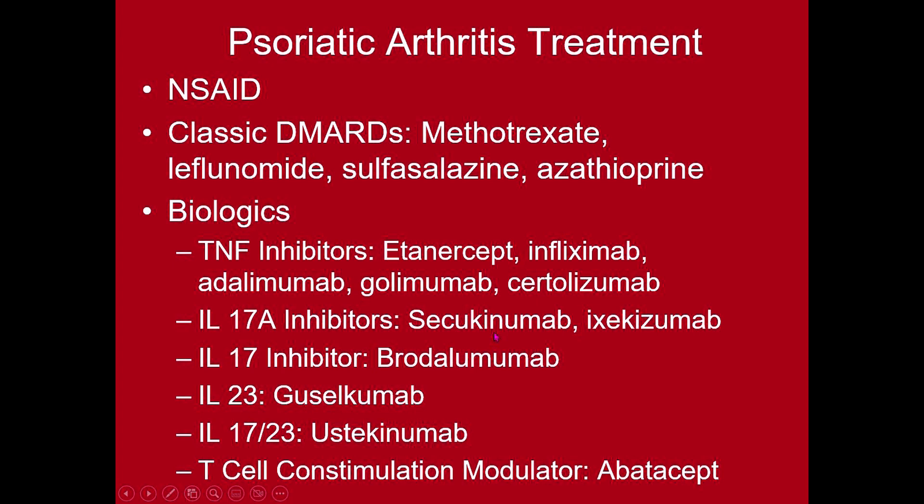There is a more complete discussion of the disease-modifying anti-rheumatic drugs in the talk on treatment of rheumatoid arthritis. With respect to biologic therapies, multiple cytokine blockers have been studied in the treatment of psoriasis and psoriatic arthritis and found to be helpful. As with rheumatoid arthritis, the tumor necrosis factor inhibitors — Etanercept, Infliximab, Adalimumab, Golimumab, and Certolizumab — are helpful in the treatment of psoriatic arthritis.